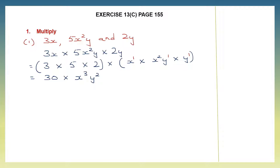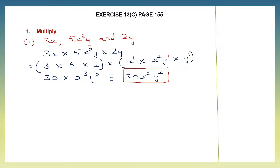So now when I multiply 30 into x to the power of 3 and y squared, I get 30x cubed y squared. So this is my final answer. Let's move on to question 2.